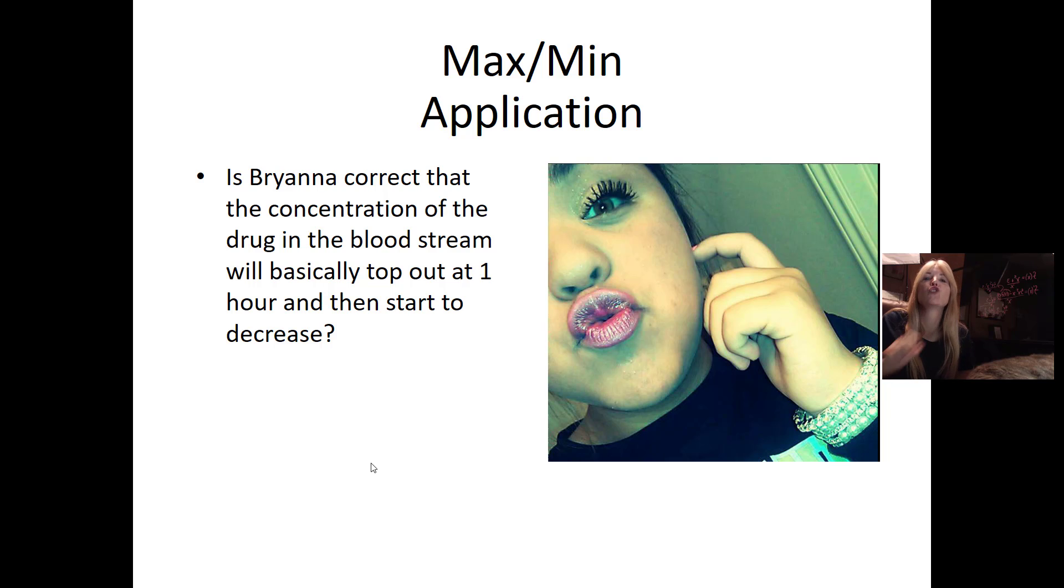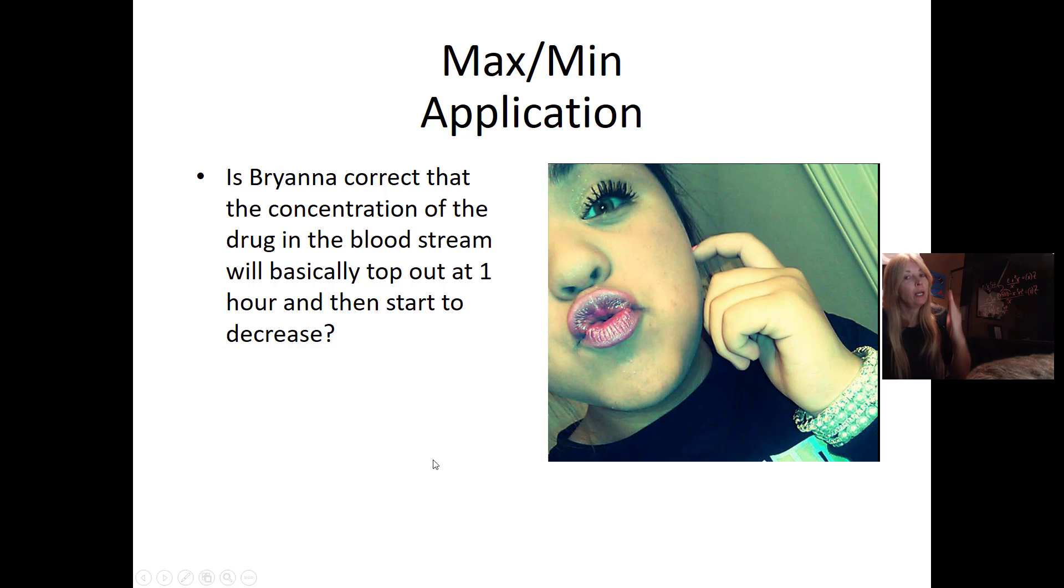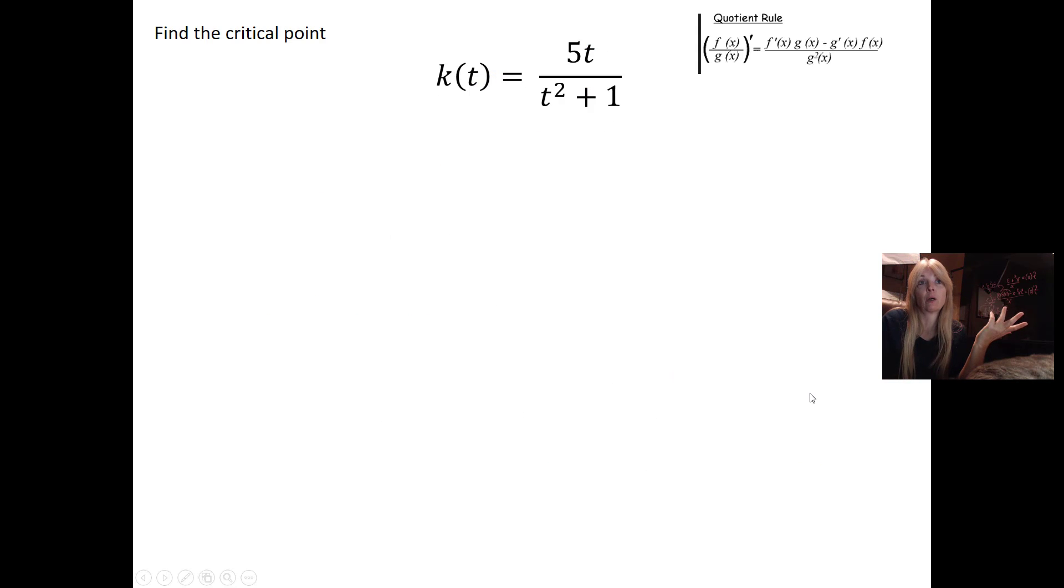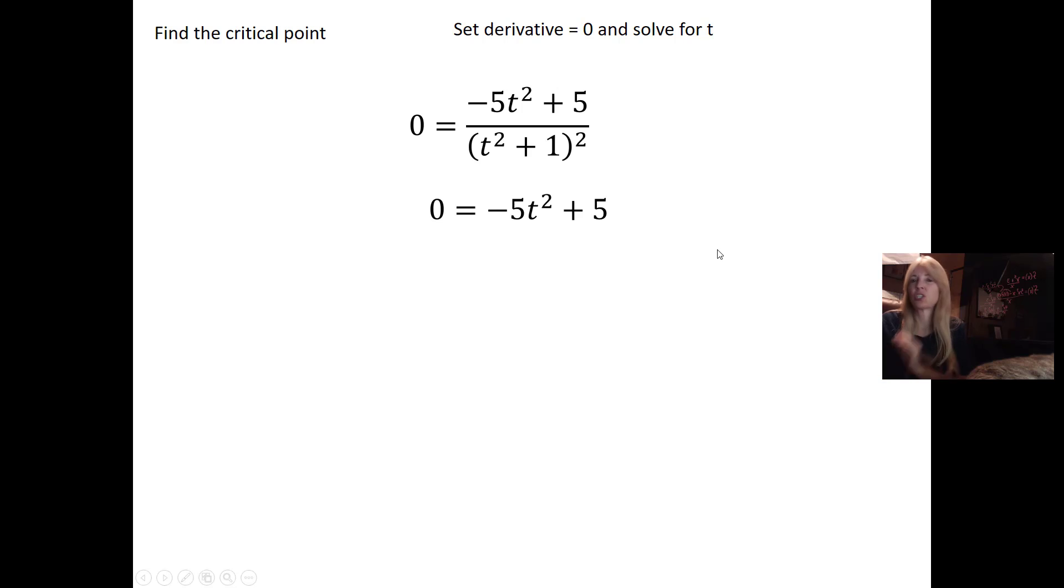So they're basically saying the drug's going in her bloodstream, it's topping out, and then it starts to decrease. That's what we want to figure out. So I guess we probably want to find a critical point. How do you take the derivative of this? Quotient rule. There's my quotient rule. Quotient rule says take the derivative of the top, leave the bottom alone, minus leave the top alone, derivative of the bottom, and then square the bottom. I multiply all this stuff out, collect like terms.